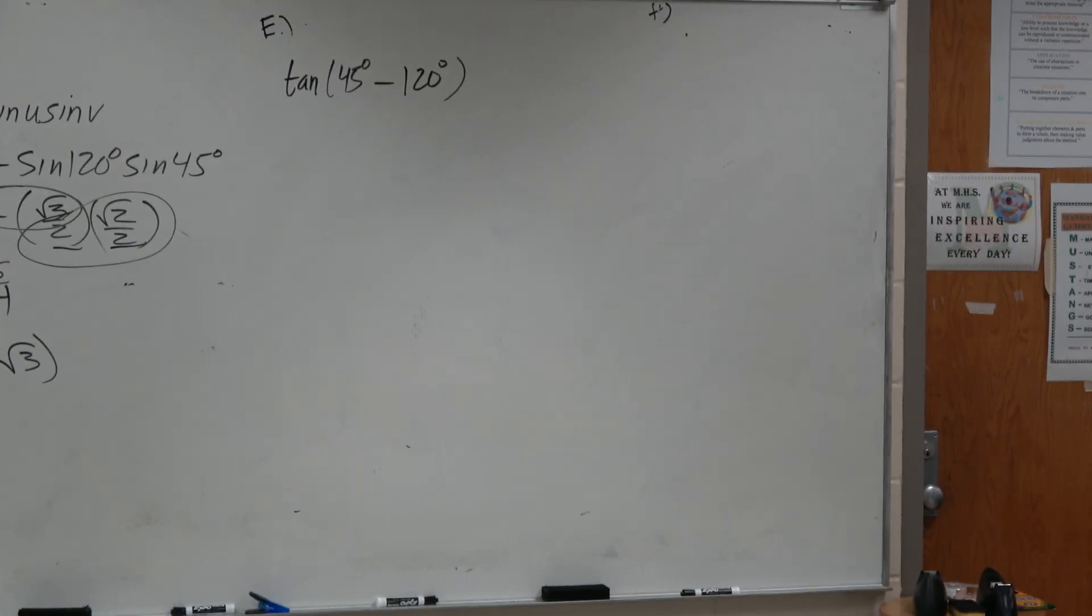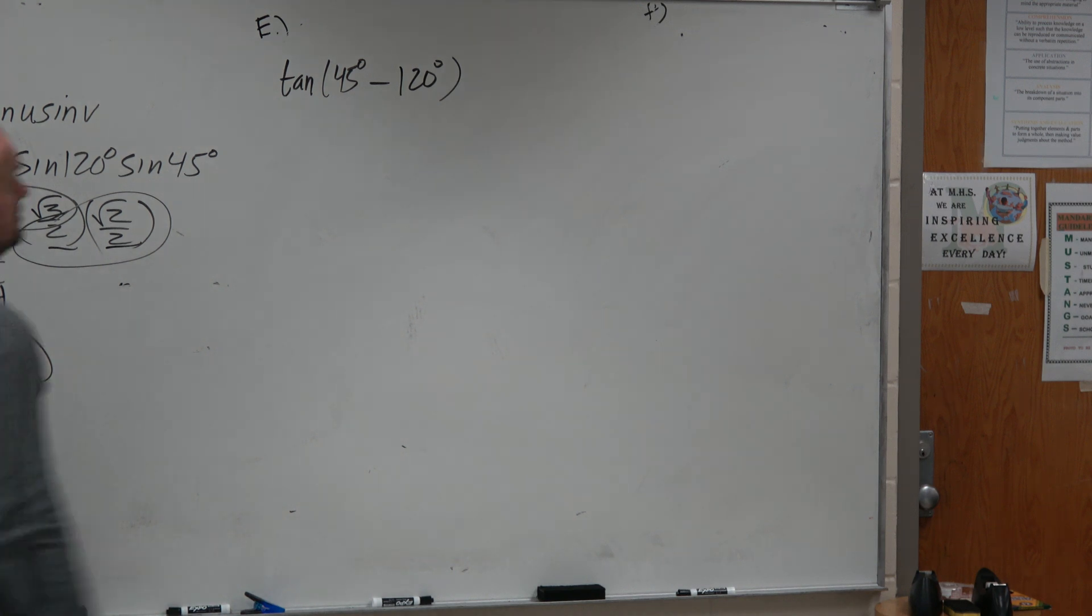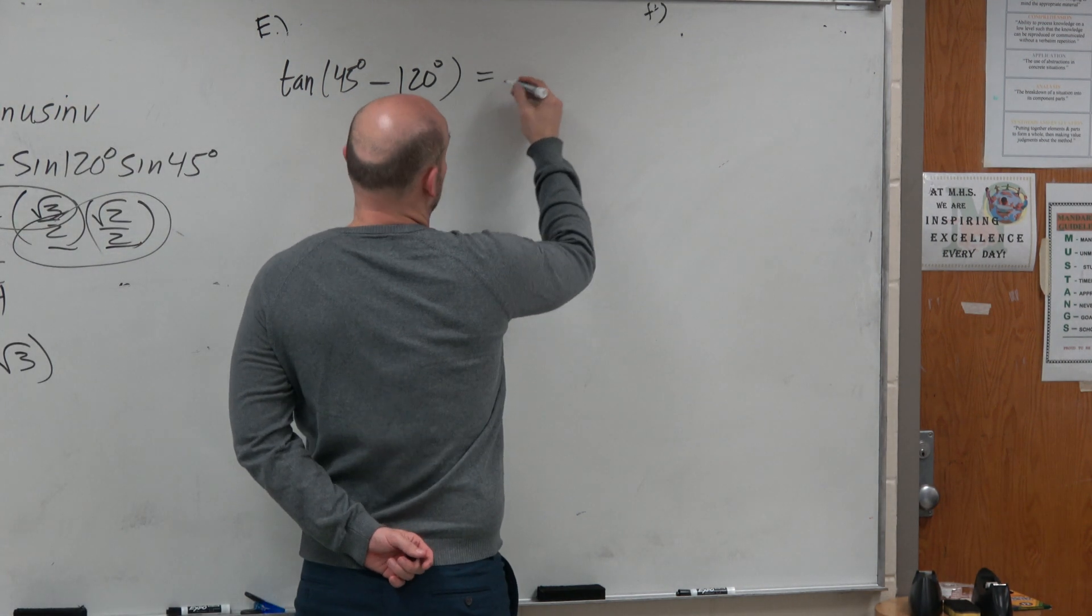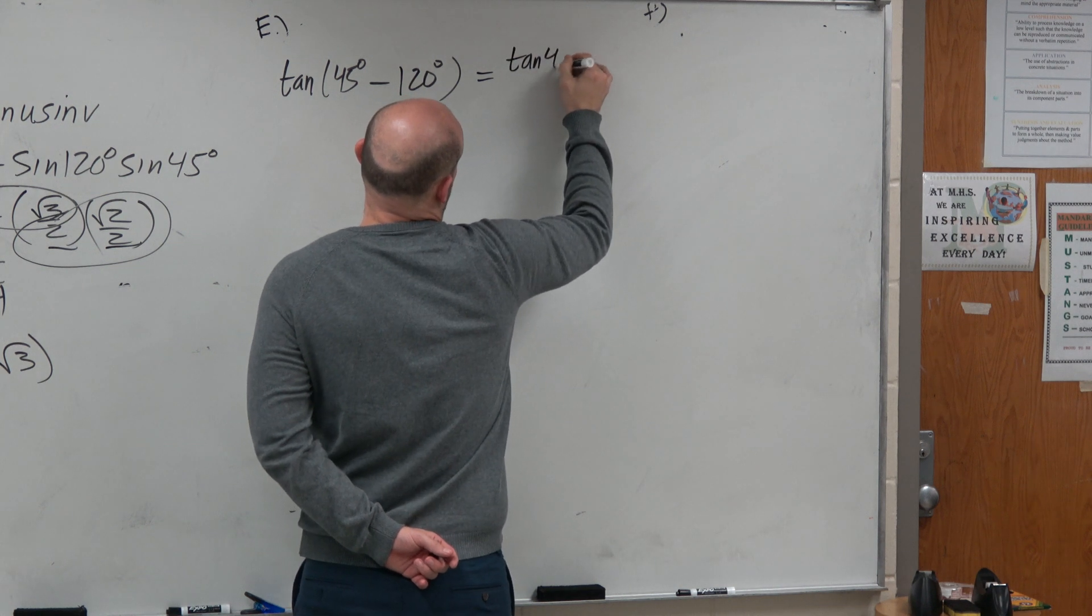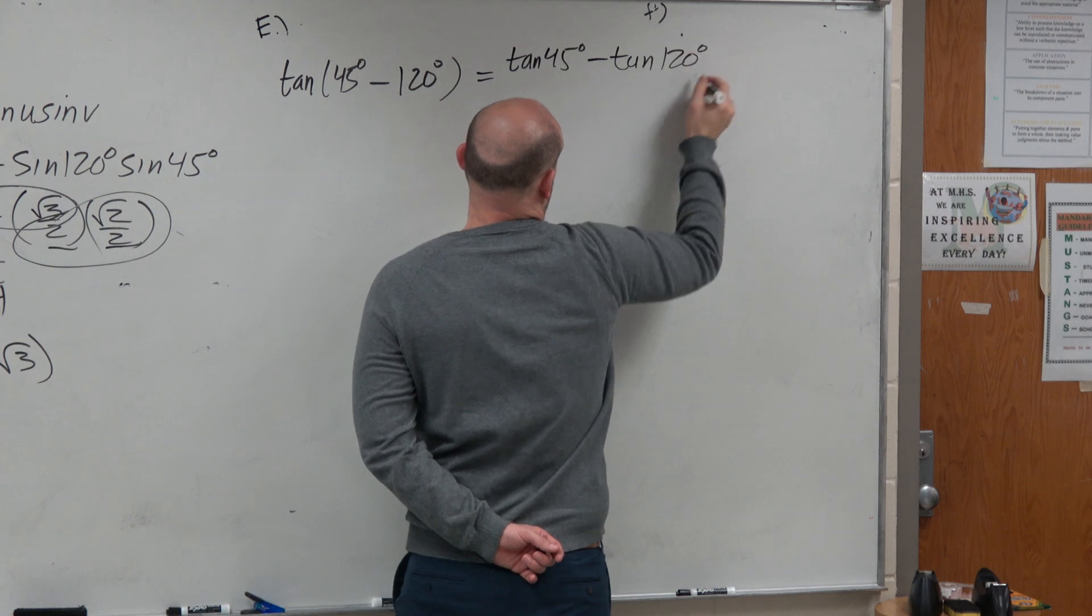So again, we notice the tangent we're subtracting. So via the tangent formula for the difference of two angles, I'm just going to go right to the formula. That's going to be the tangent of 45 degrees minus the tangent of 120 degrees.